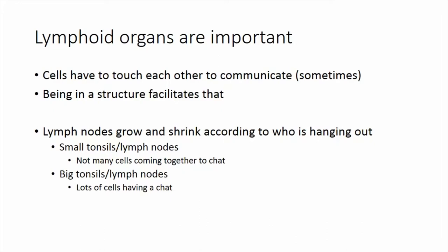I want to say a word about size of lymphoid organs, because this is always a cause of consternation. The glands in your neck get bigger when you have a cold and shrink back down—that's normal. The more cells that are having a conversation, the bigger the lymph node. When they've done their job, the lymph node will shrink back down. Sometimes a lymphoid organ grows and stays big—it doesn't necessarily mean cancer. It just means the cells didn't know they were supposed to go away.